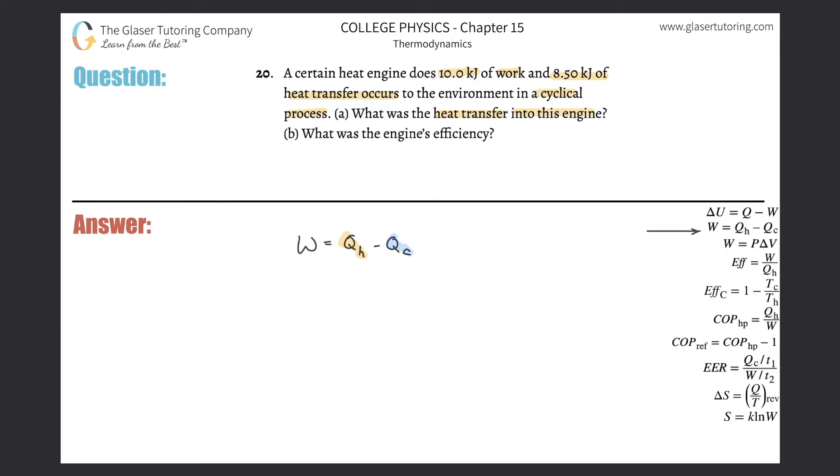We're just going to plug in the absolute values here because the negative sign is already in the formula. What was the heat transfer into this engine? That means we're trying to solve for Q sub H. So mathematically here, that's fairly straightforward, it's just going to be equal to the work plus the heat loss of the cold reservoir.